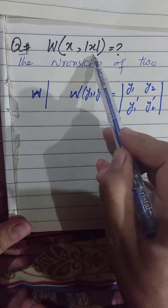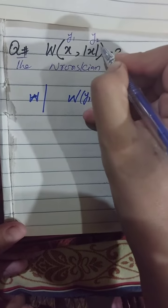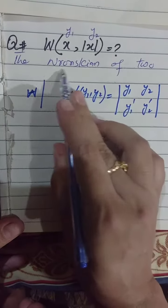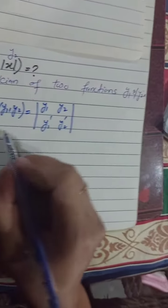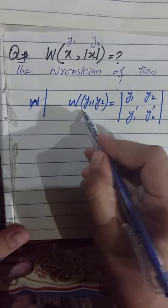Here we have to find out the Wronskian of the two solutions y1 and y2, that is x and x absolute. The Wronskian of two functions or solutions y1 and y2 is given by the formula.